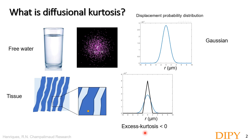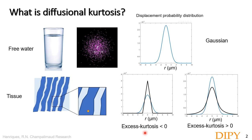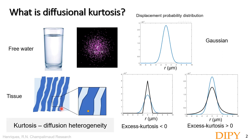In biological tissues, we however typically observe positive kurtosis. The reason is that since we have a large number of compartments with different diffusivities, the displacement probability distribution will have higher probabilities in the tails than the Gaussian distribution. This reflects the higher displacement of water in compartments with higher diffusivities, such as the extracellular space. The larger the variance of diffusivities across compartments, the higher the kurtosis, and that is the reason why kurtosis is sometimes assumed to be an index of tissue diffusion heterogeneity.